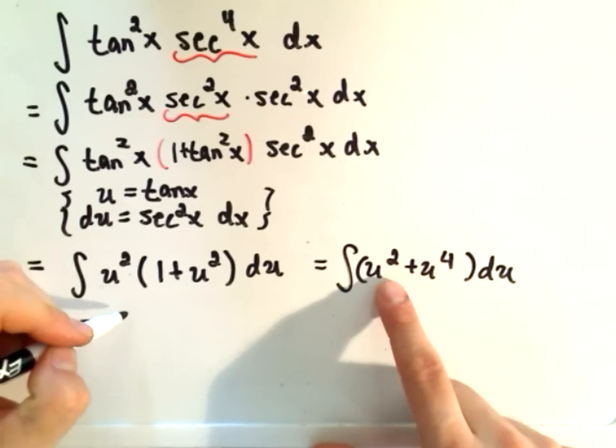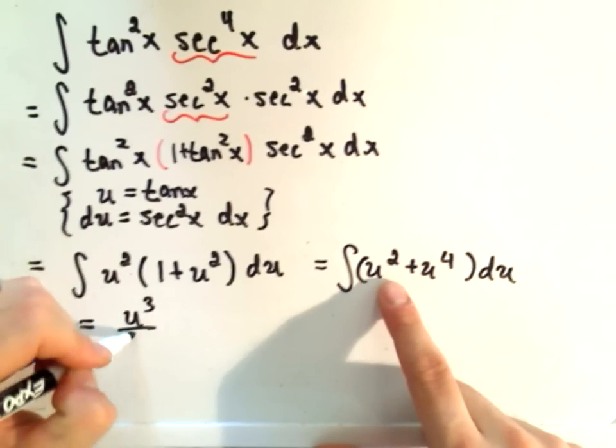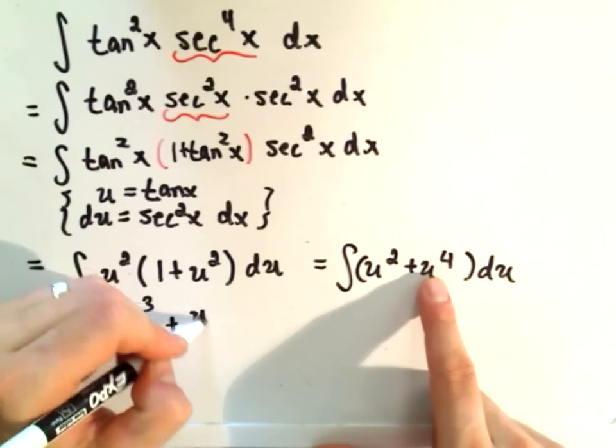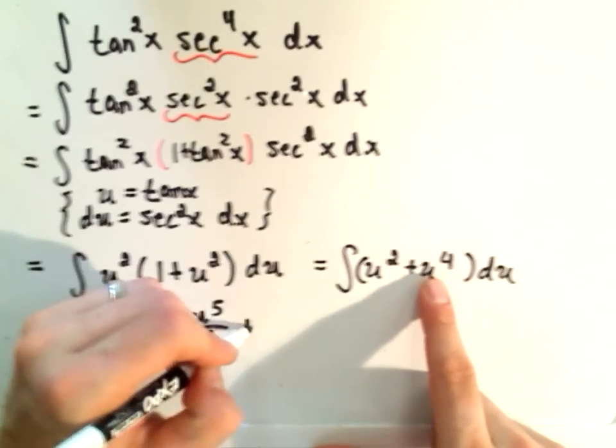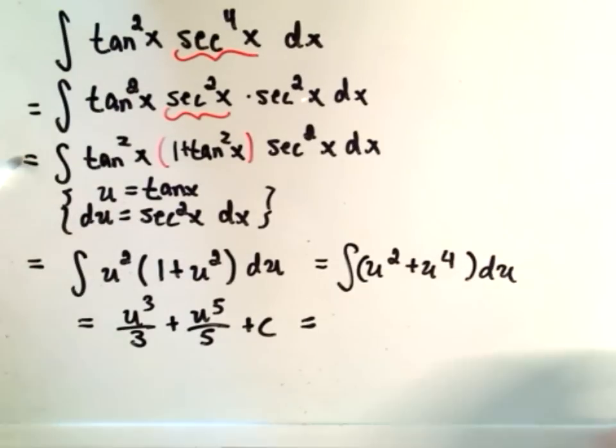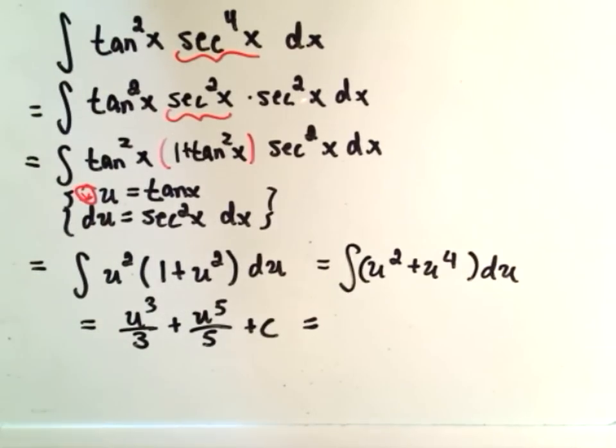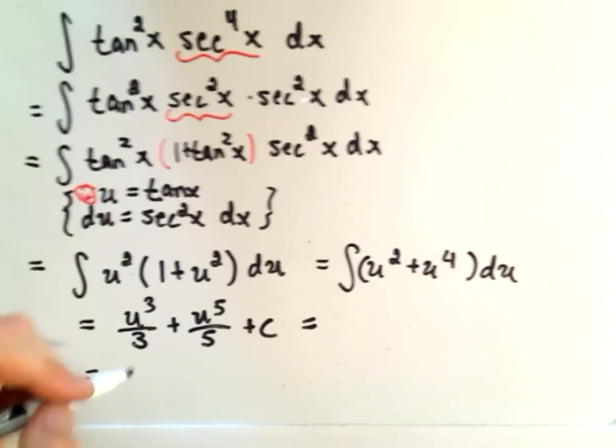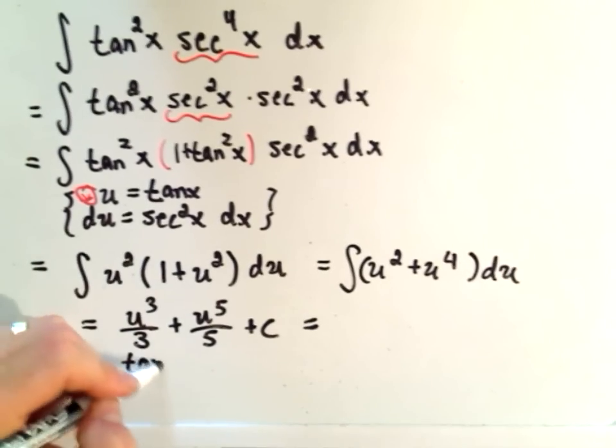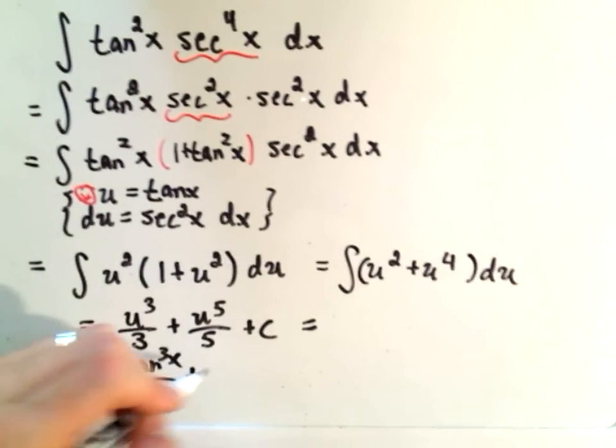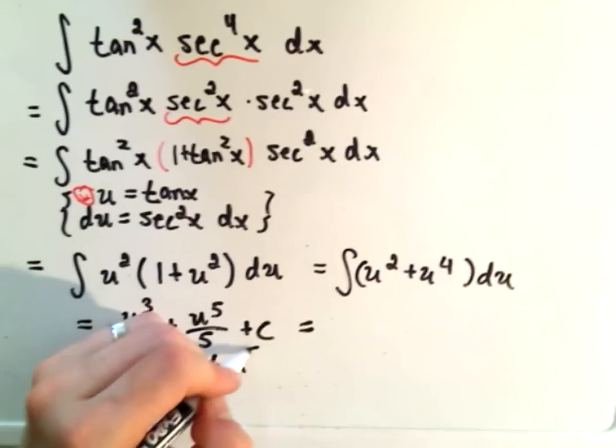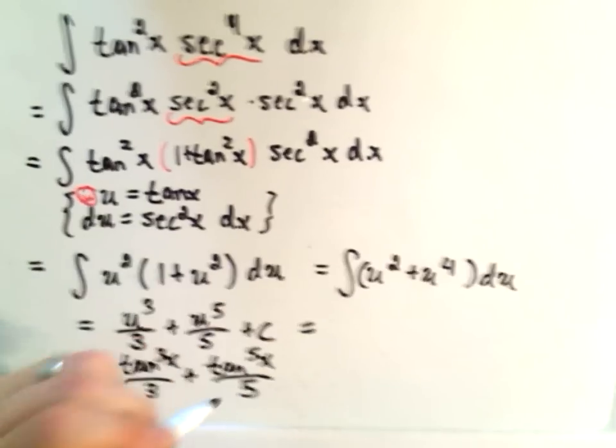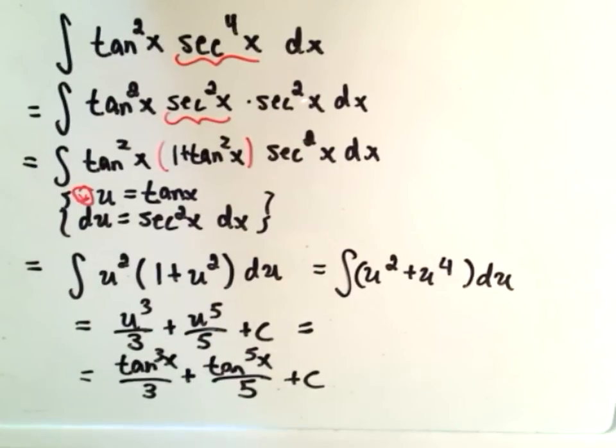If you do the trick where you add one and divide, we'll get u to the third over 3, plus u to the fifth over 5, plus c. And now just replace your u-substitution. Again, you started with x's, finish it off with x's. So we'll simply get tangent to the third of x over 3, plus tangent to the fifth of x over 5, plus c. Okay, is our answer.